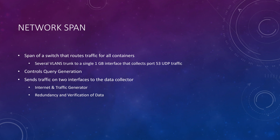The work span — the blue piece on the original slide connecting both the internet and the traffic generator — is the span of a switch that routes traffic for all of the containers. Several VLANs where these containers are trunked to a single one-gig interface collect port 53 UDP traffic. It controls query generation and sends traffic on two interfaces to the data collector: one from the internet and one from the traffic generator. They did this for redundancy and verification to ensure data was being collected from both directions, so nothing was missed.